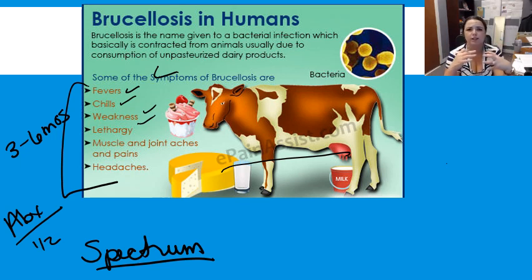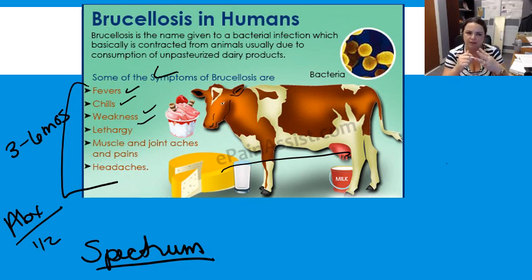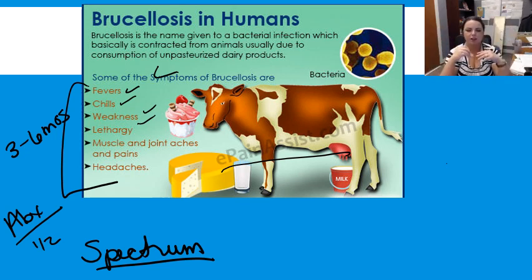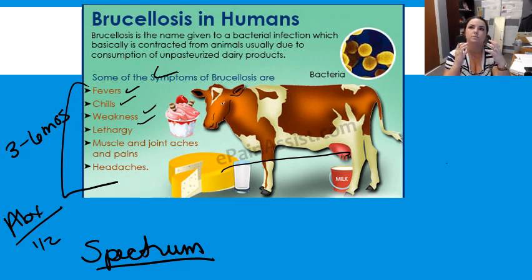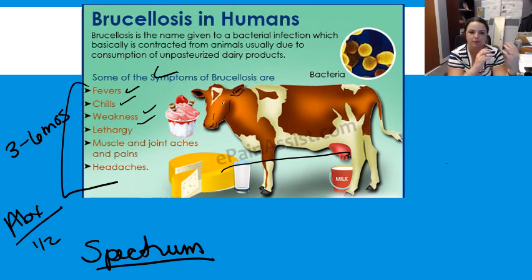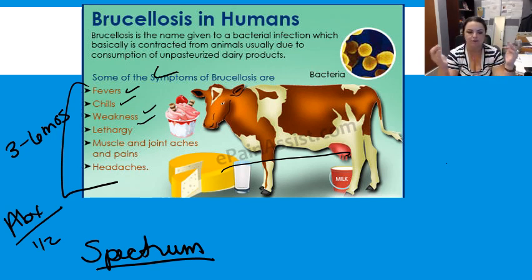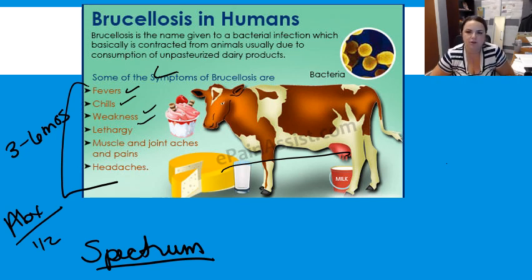Any time within three to six months of discontinuing antibiotics, we see relapses. The relapses are really associated with a persistent focus of infection in the bone, spleen, and liver. So it's not so much the full systemic infection again, but concentrated symptoms associated with a specific tissue group. This isn't really due to antibiotic resistance — it's simply that we didn't fully clear the pathogen from that particular location.